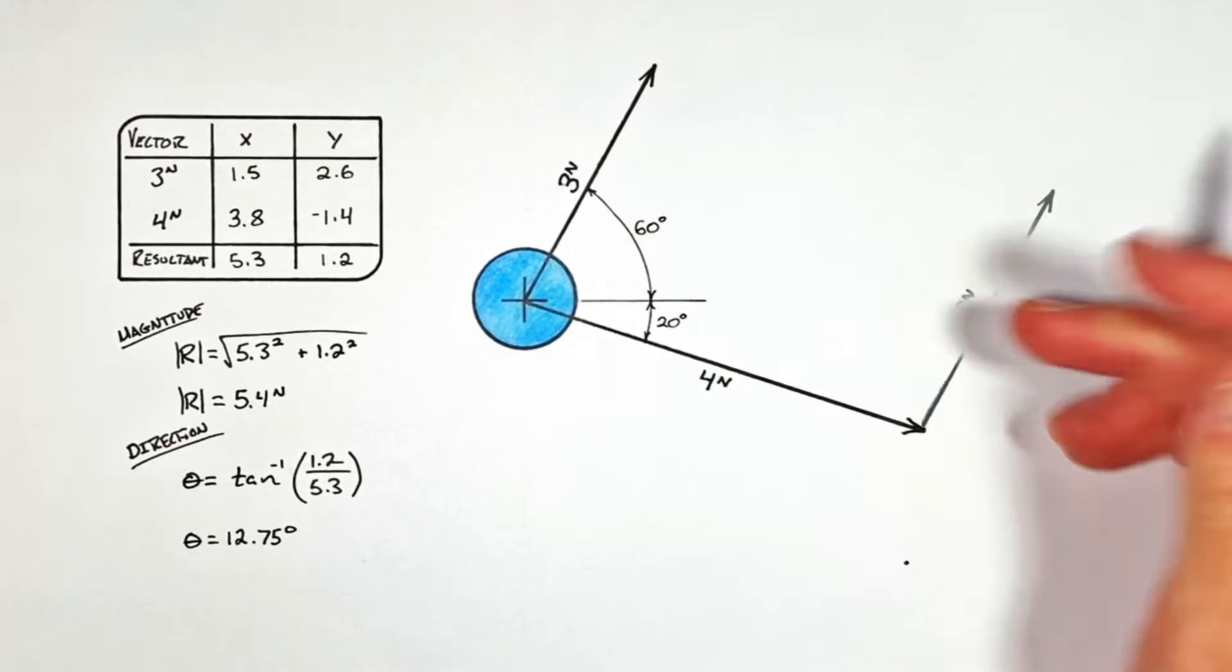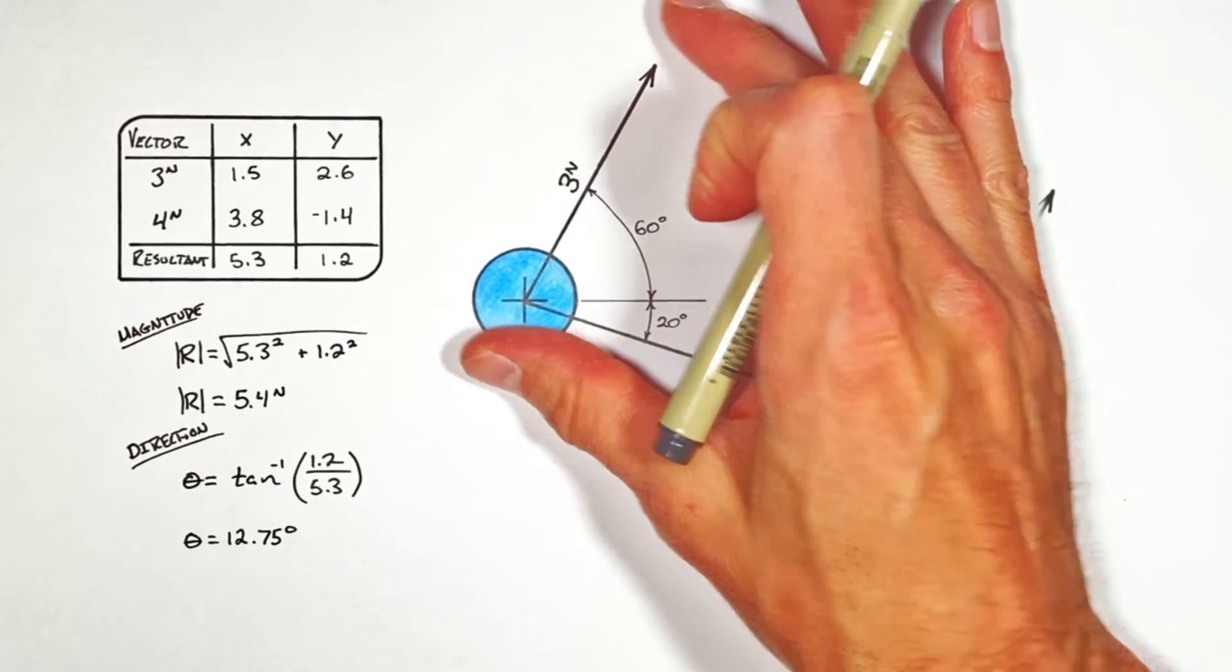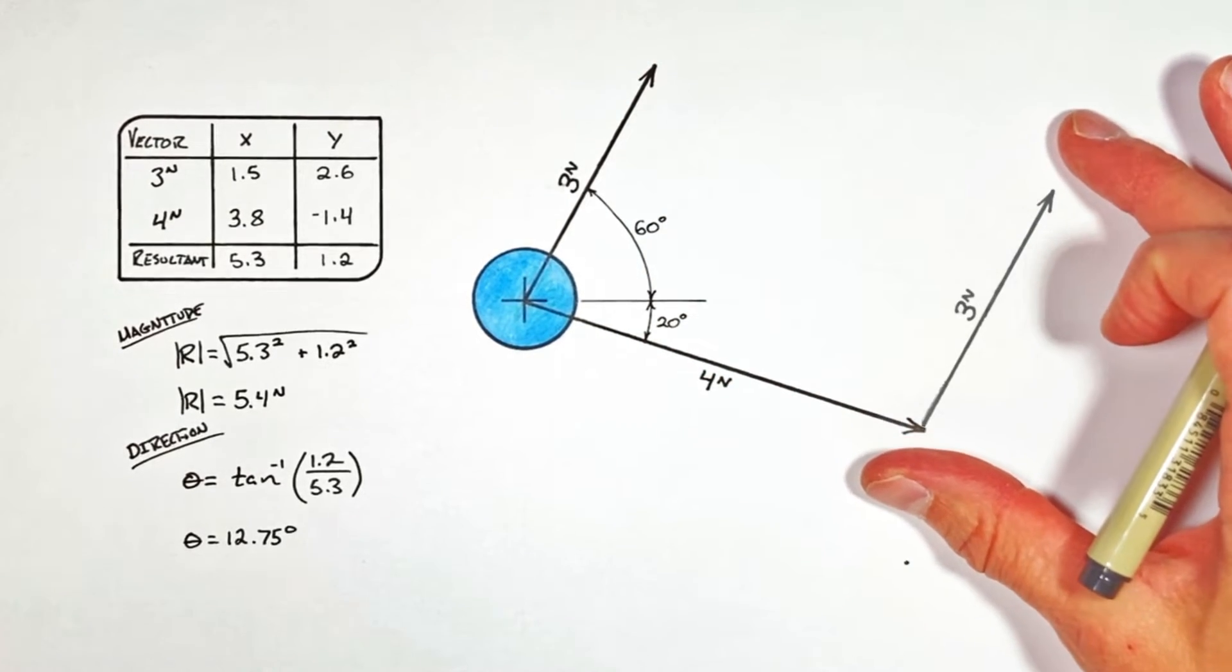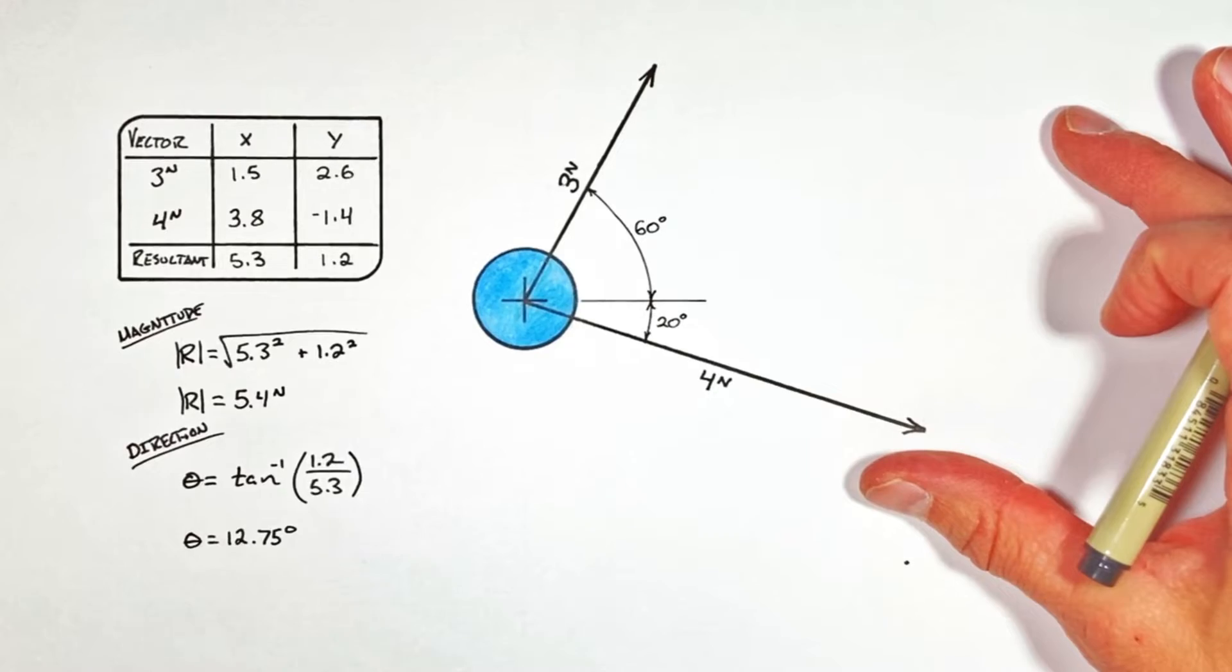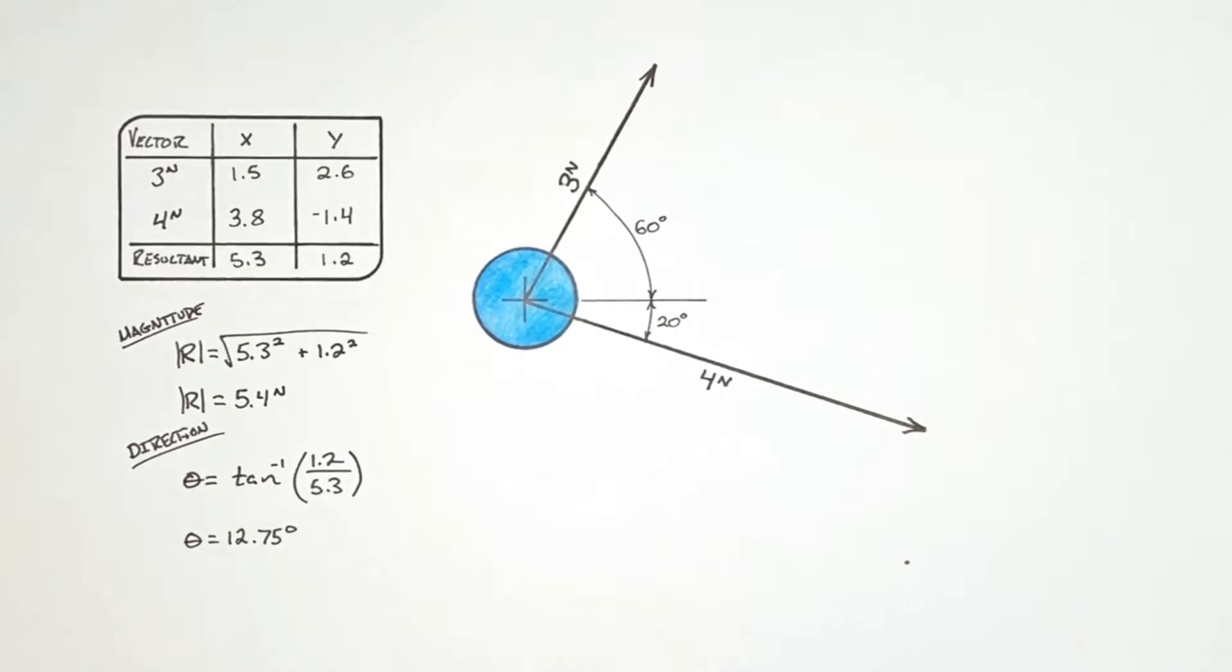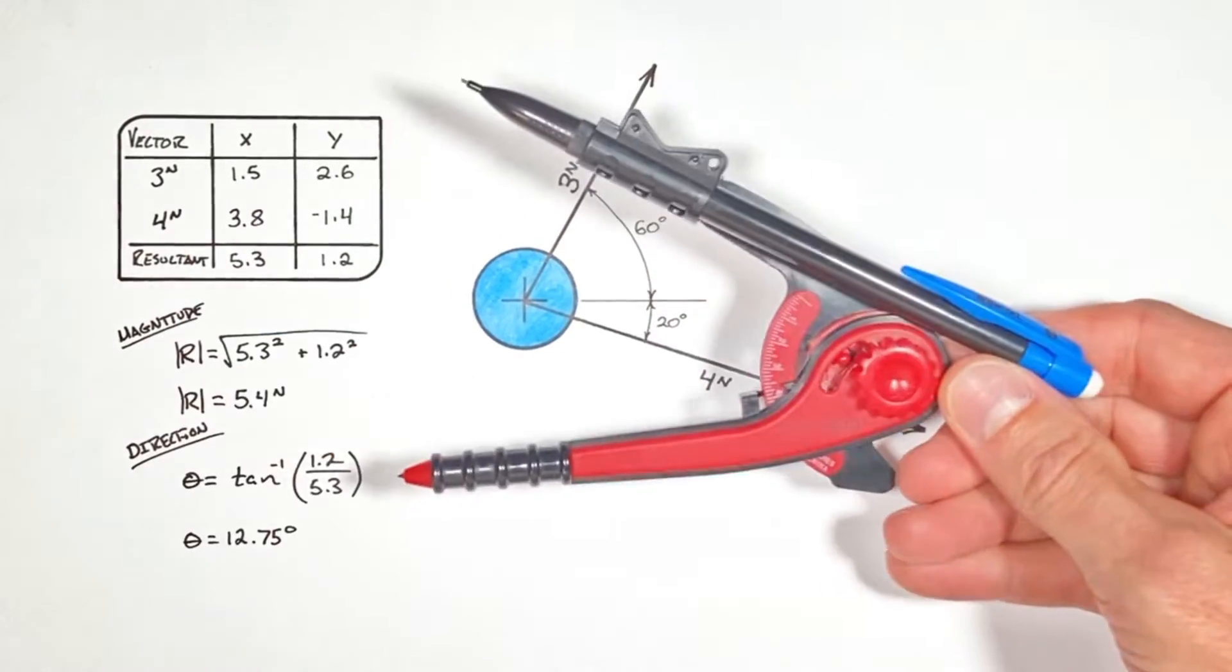But the obvious issue for you at home is how do you take this vector sitting right here and transpose it or copy and paste it over here? And the answer is actually pretty simple. All you need is one of these, a compass.